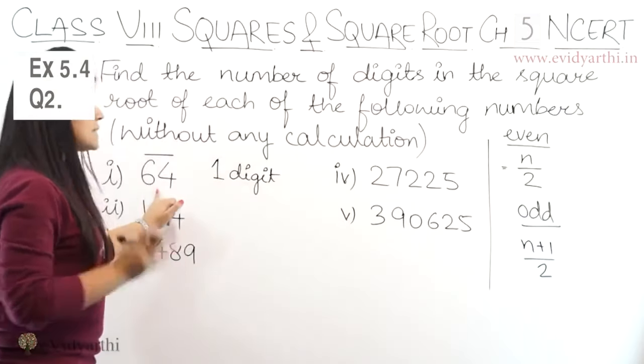Second part mein yahan pe 3 numbers hain. So 1, 2. Do baar laghenge is mein. So means iska jo square root hoga woh 2 digit ka hoga. Aur yehi cheez agar mein formula se karti. So yahan pe 3 digits hain. 3 plus 1 upon 2 which is 4 upon 2 which means 2 digits. So same thing.